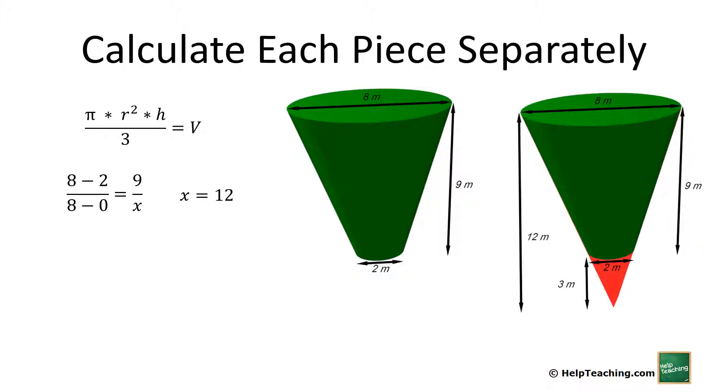So we can plug that into the formula and we get π times 4² times 12 (our total height) divided by 3, which gives us 201.06 cubic meters.